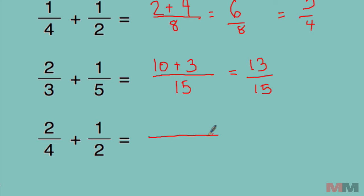And then the very last one. 4 times 2, that's 8. And then numerator to denominator. 2 times 2, that's 4. I'm going to add it to 1 times 4, which is 4. 4 plus 4 is 8 over 8, which simplifies to 1.